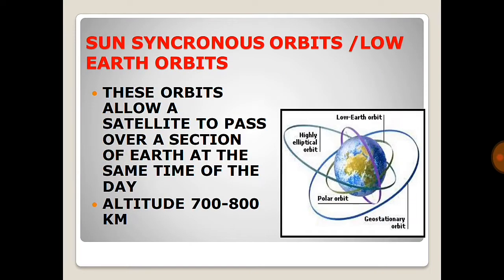Next are sun-synchronous orbits, which are low earth orbits. Low earth orbits are at a maximum height of about 800 to 1,000 kilometers. These orbits allow the satellite to pass over a section of the Earth at the same time each day, covering regional areas such as Asia or Europe within specific longitude ranges. In the image you can see the polar orbit, low earth orbit, and geostationary orbit — all three differences are visible.